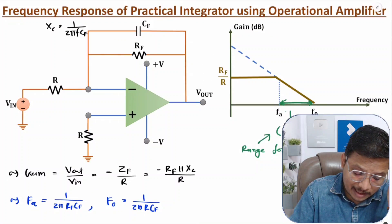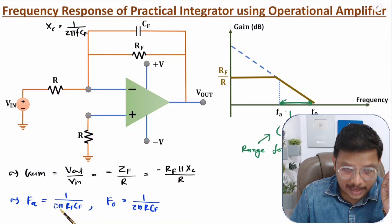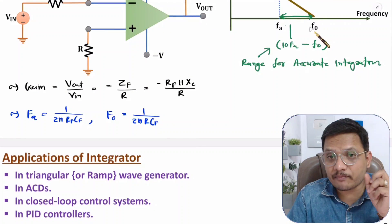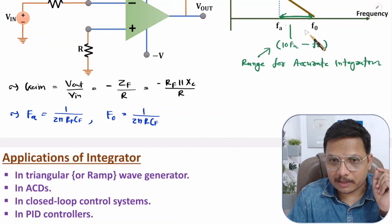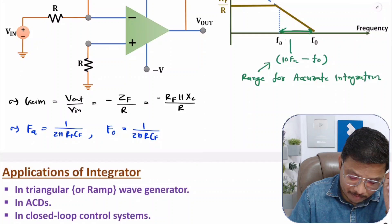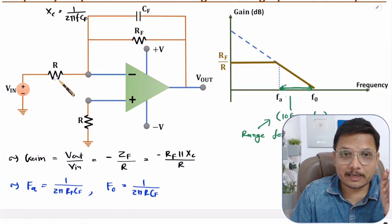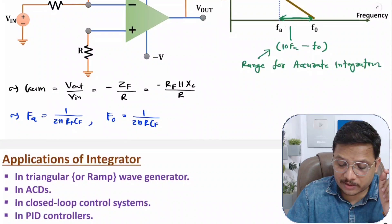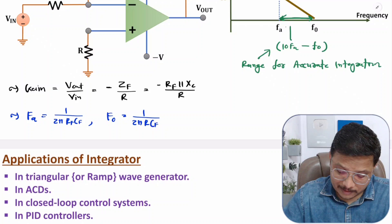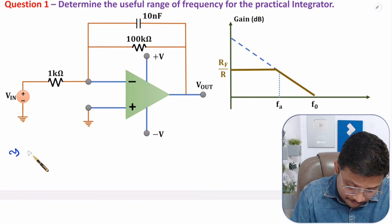Fa is the cutoff frequency based on the feedback combination, calculated as 1/(2π·Rf·Cf). F0 is the frequency at which gain equals 1, calculated as 1/(2π·R·Cf), where Cf is the feedback capacitor and R is the input resistor. So the useful range of frequency happens from 10Fa to F0. First of all, I will explain how to calculate Fa.